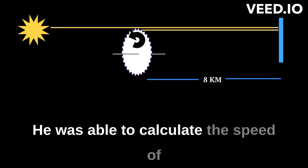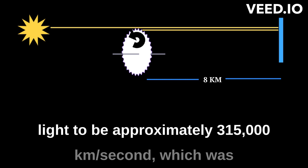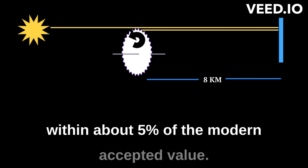He was able to calculate the speed of light to be approximately 315,000 km per second, which was within about 5% of the modern accepted value.